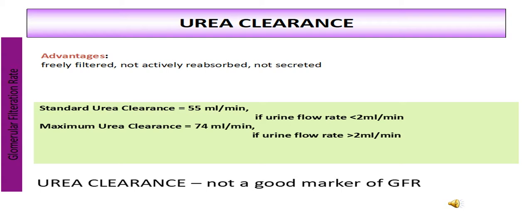Advantages of urea clearance: urea is freely filtered, not actively reabsorbed, and not secreted. Standard urea clearance is equal to 55 ml per minute. If urine flow rate is less than 2 ml per minute, maximum urea clearance is 74 ml per minute. If urine flow rate is more than 2 ml per minute, urea clearance is not a good marker of glomerular filtration rate.